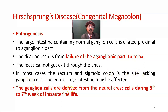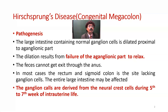The ganglion cells are derived from neural crest cells during the fifth to seventh week of intrauterine life. If for any reason there is no migration of neural crest cells into the wall of the large intestine, then Hirschsprung's disease or congenital megacolon will develop.